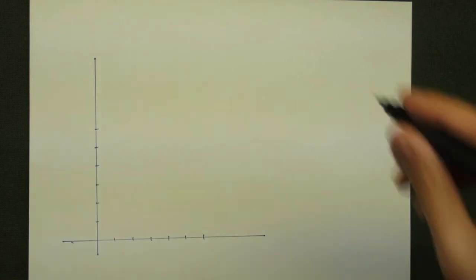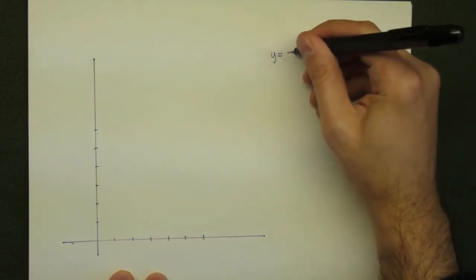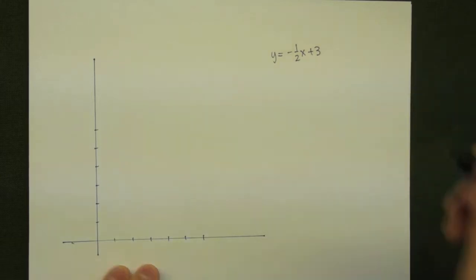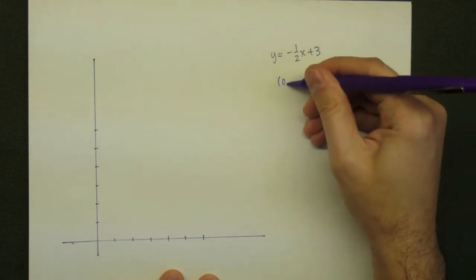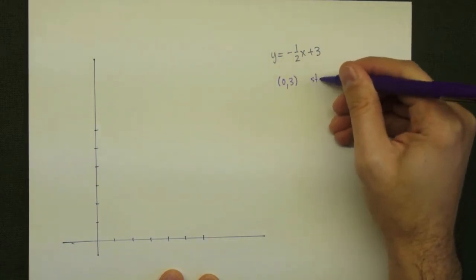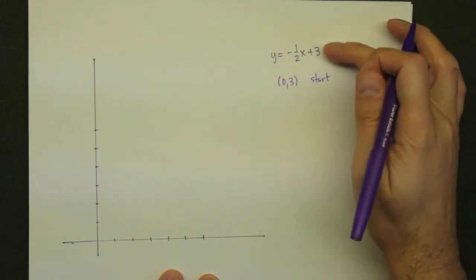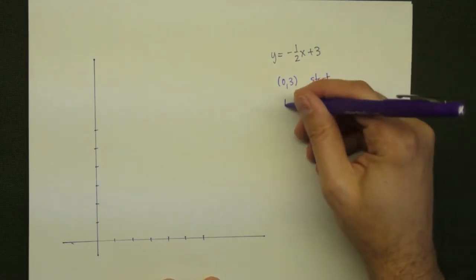Let's take a look at an example of this type of line. If we want to graph y is equal to negative 1/2x plus 3, then we can look at the equation and find the starting place. 0,3 will be the y-intercept because of the 3 in the equation, and that will be where we start.